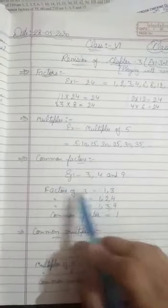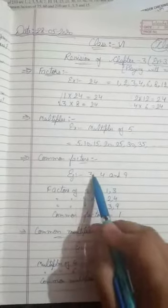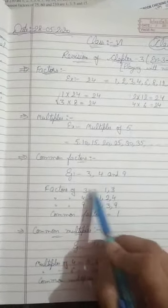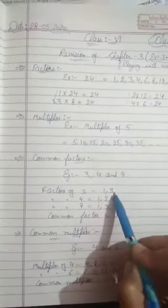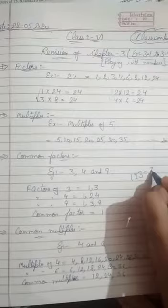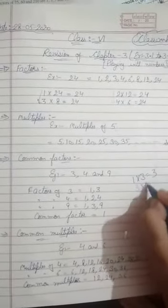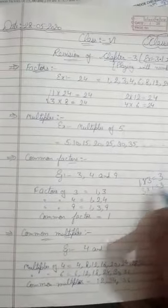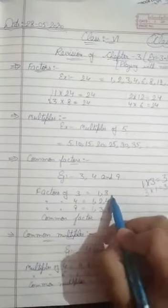So what should I do? Firstly find the factors of 3, 4, and 9. The factors of 3 are 1 and 3. Why? Because when we multiply 3 with 1 only, we will get 3, or 3 multiply 1, we will get 3.